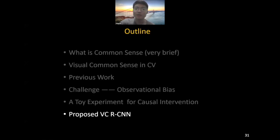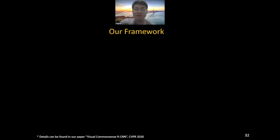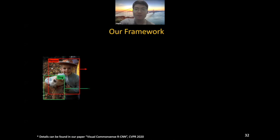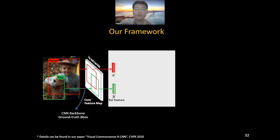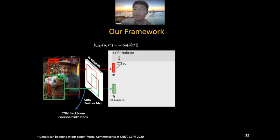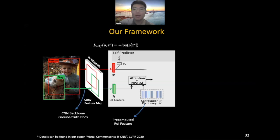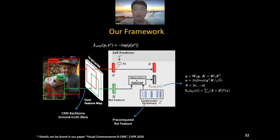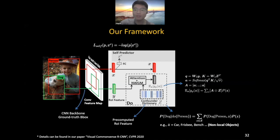Based on this theory of causal intervention, we present our framework VC-RCNN. It takes an image as input and generates a feature map from a CNN backbone. Unlike Faster RCNN, we discard the region proposal network and directly use ground truth bounding boxes to extract object-level representations. Each ROI is fed into two branches: one is a self-prediction branch to predict its own class, and the other is a context predictor with our do-calculus. We maintain a pre-computed confounder dictionary Z, where each entry is the average ROI feature of a given category in the dataset. With the help of the confounder dictionary, we compute the expectation of Z using attention and NWGM approximation. This operation is the do-calculus expression in CV. With the help of the confounder Z, we actually borrow non-local objects not even in the current image to help de-confound.